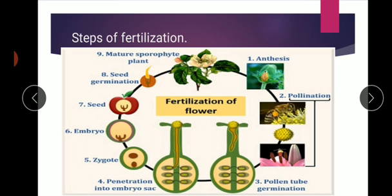What is the process of fertilization? Fertilization is the process of reunion of male and female gametes. In this picture, they are telling you about the steps of fertilization: first anthesis, then pollination, pollen tube germination, penetration of embryo sac, then zygote formation, then seed germination, and finally a mature sporophyte plant — how a plant is grown.